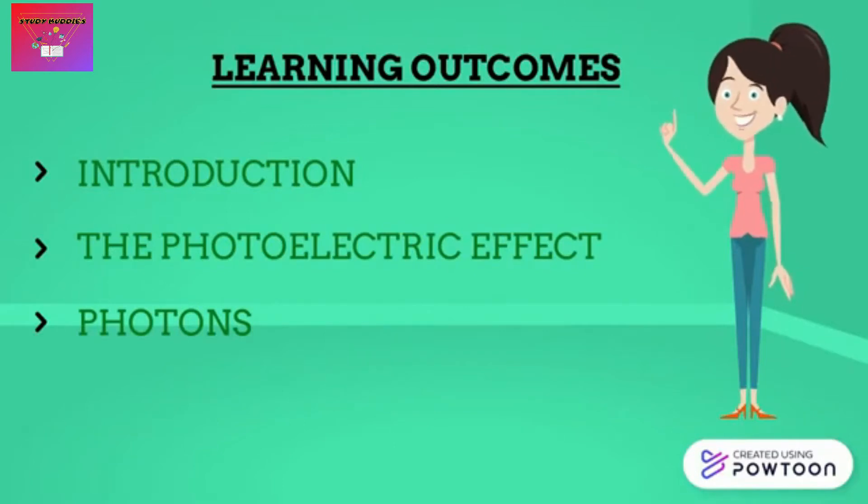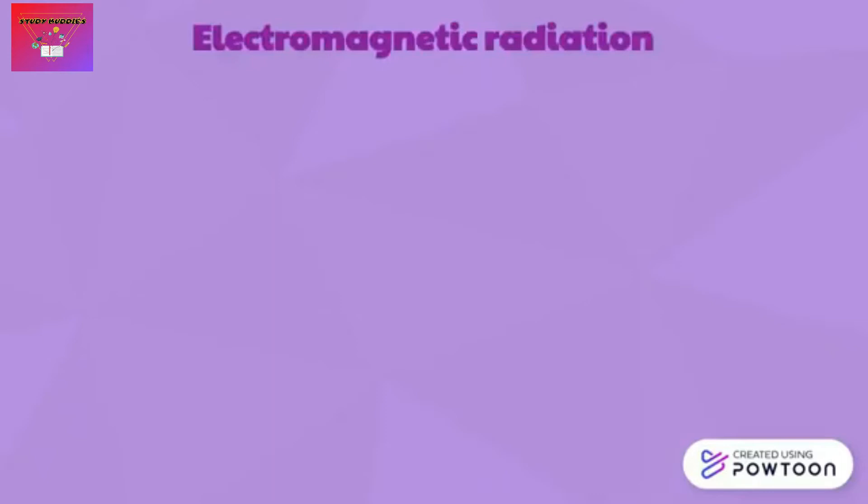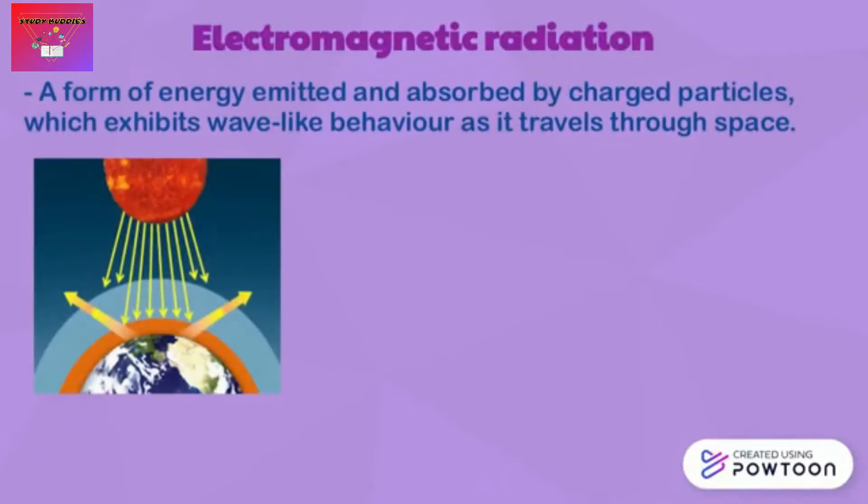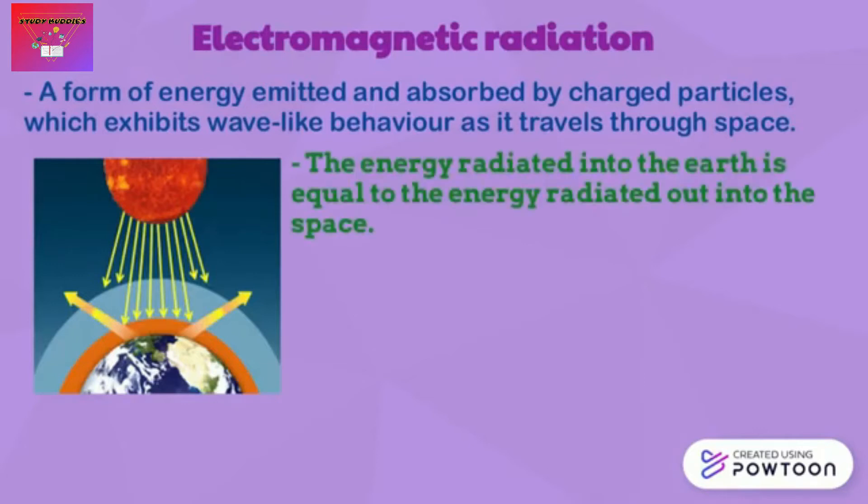Let's start the lesson. Electromagnetic radiation is a form of energy emitted and absorbed by charged particles which exhibits wave-like behavior as it travels through space. It also has a lot of benefits to living organisms. The energy radiated into the Earth is equal to the energy radiated out into the space.